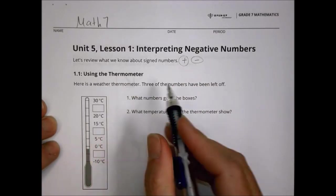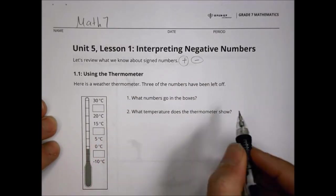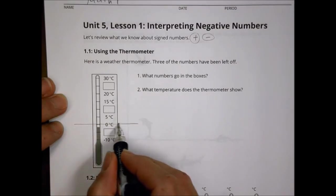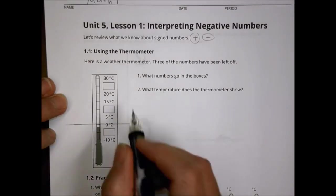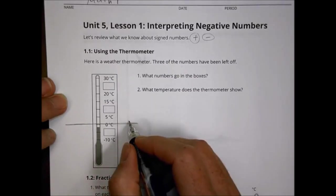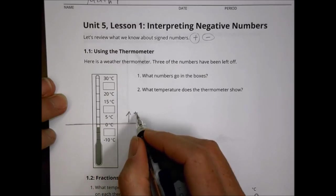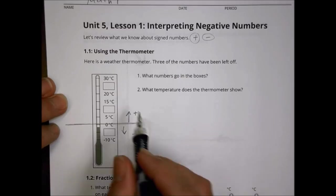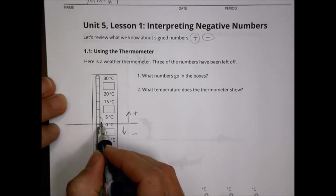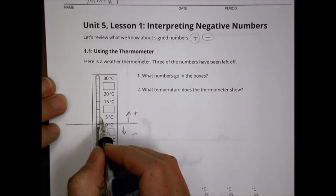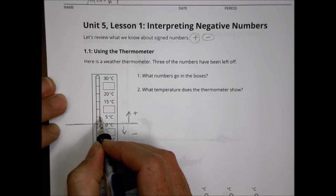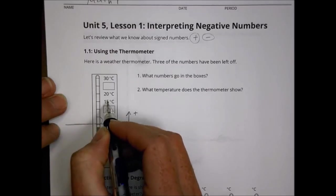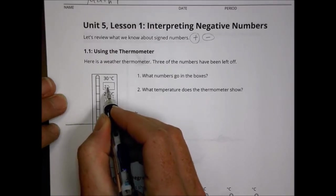We begin with a weather thermometer. Three numbers have been left off — what numbers go in the boxes? We can see zero is our center point. Everything going up is a positive number: 5, 15, 20. Everything below is negative. The marks go up by five, so the increments are five degrees. Five plus five is 10°C, then 15, then 20, then 25°C on the positive side.